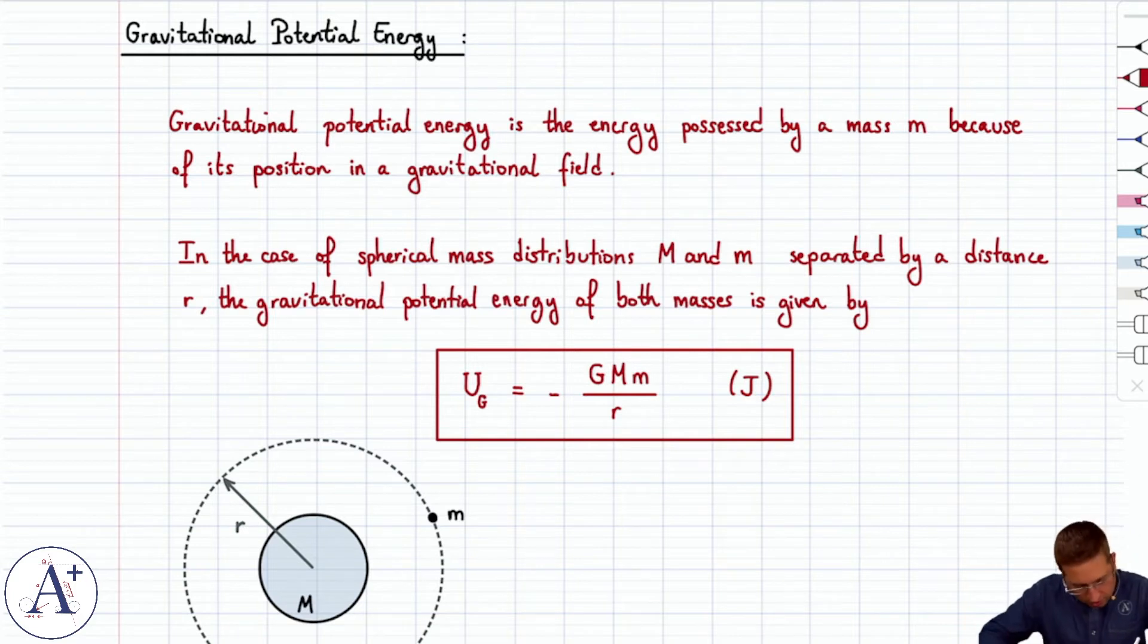So the mass here orbiting at a distance little r from the center is going to have a potential energy, not MGH, we can't use that.